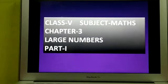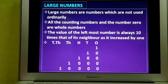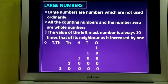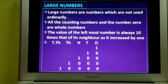Large numbers are the numbers that are significantly larger than those ordinarily used in everyday life. All counting numbers and the number zero are the whole numbers. As the number of digits in a whole number increases by one, the value of the leftmost place becomes ten times greater than that of its neighbor.